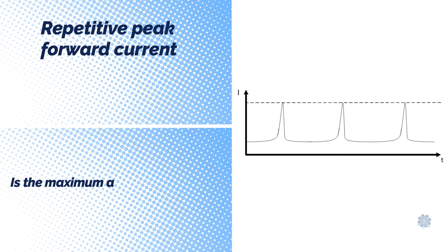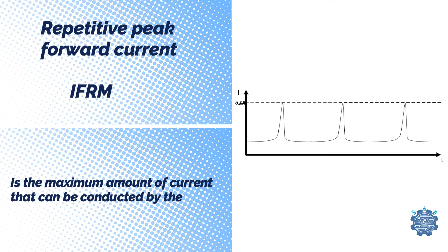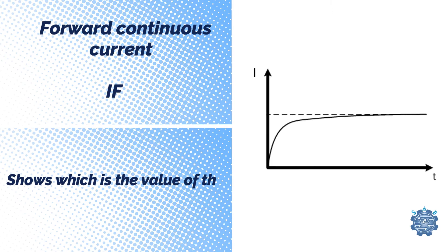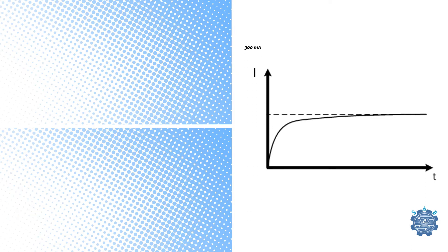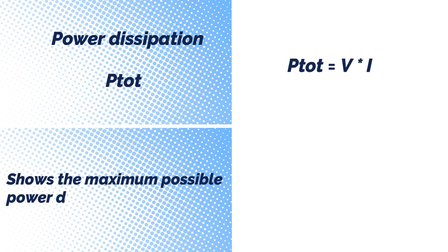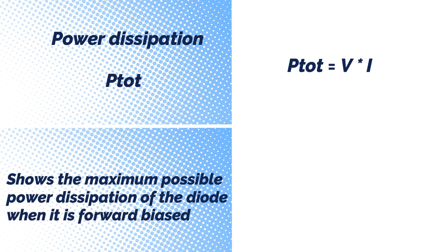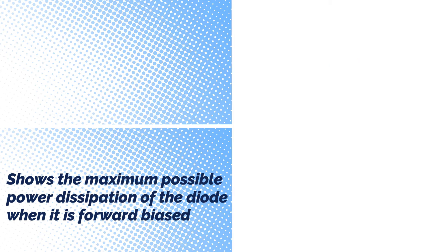Repetitive Peak Forward Current is the maximum amount of current that can be conducted by the diode repeatedly in forward bias mode. Forward Continuous Current shows which is the value of the current that can be applied continuously on the diode. Power Dissipation shows the maximum possible power dissipation of the diode when it is forward biased.